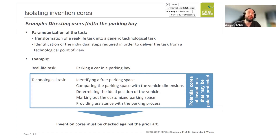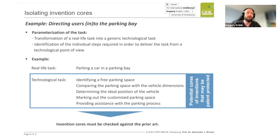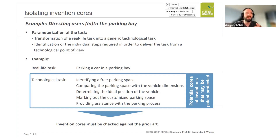We need to determine the ideal position of the vehicle — how you're going to park it — and mark out the customer's parking place to help the driver see where the free space is, and provide assistance within the parking process. All of these sub-tasks are potentially protectable by patents, so we need to check all of these tasks and perform an FTO, as mentioned before.